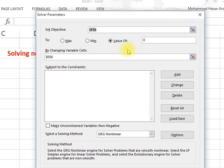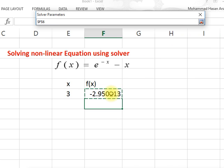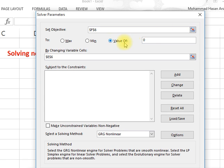What you do is set the objective. You want to set the function to a value of 0.